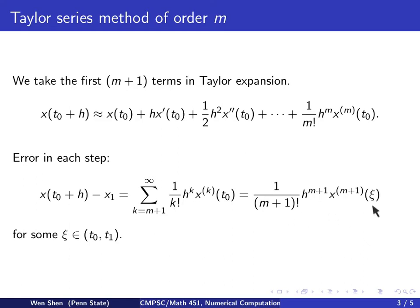ξ lies between t0 and t1, the two points where you expect. Assuming the m plus 1 derivative of x is a bounded quantity, the error is of order h to the power m plus 1. So this local error is of order m plus 1.